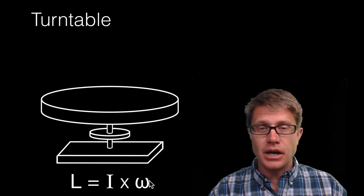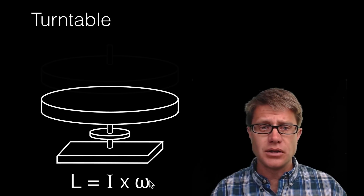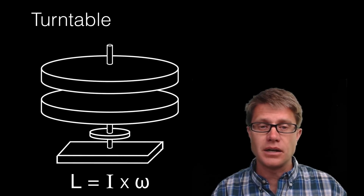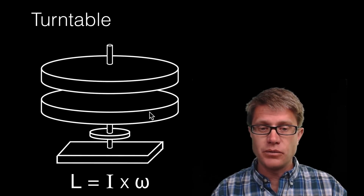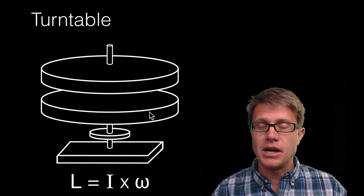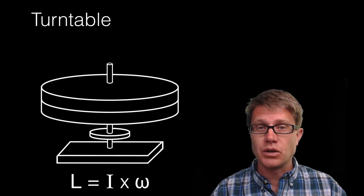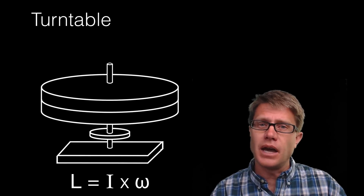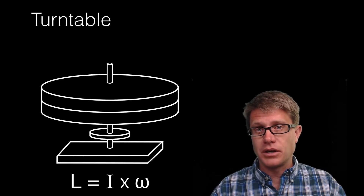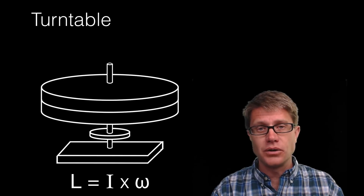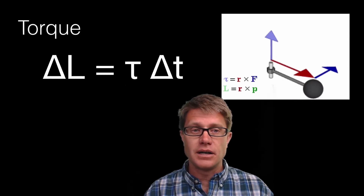You can also do collisions with the turntable. As the bottom object is spinning with a certain angular velocity, simply drop the top object onto it. Angular momentum is conserved, so when both objects spin together, you will see a decrease in angular velocity.